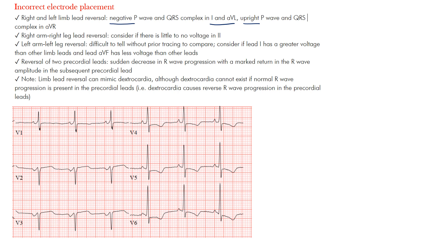Now in terms of the right arm and right leg lead reversal, you should consider that if there's no voltage in lead two. Pretty much if it's a flat line in lead two, make sure to consider that. In terms of a left arm, left leg reversal, this is difficult to tell without using a prior tracing. And oftentimes our patients do have that available, but you should consider this if lead one has a greater voltage than the other limb leads and if lead AVF has less voltage than the other leads.